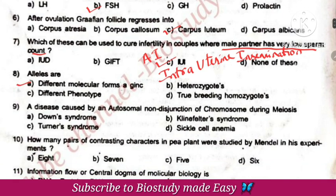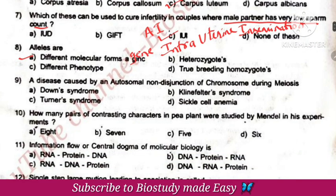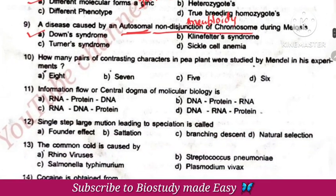Alleles are different forms of a gene. Disease caused by autosomal non-disjunction of chromosome — this is aneuploidy. The autosome example is Down syndrome.